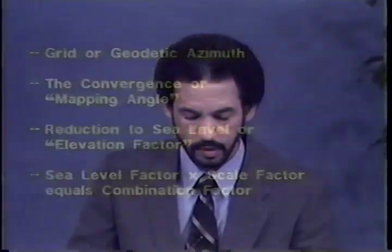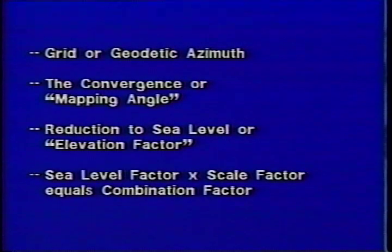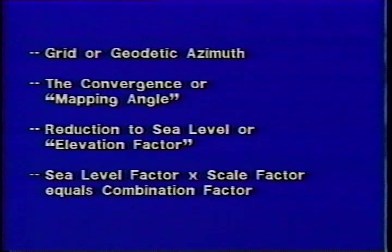On the exam, you will be required to know how to determine the following: grid or geodetic azimuth, the convergence or mapping angle, reduction to sea level or elevation factor, and the combination factor, which is the sea level factor times the scale factor. I recommend that you devote adequate study time to each of these areas, as they are an integral part of performing the traverse and associated calculations.